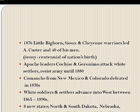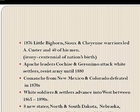Apache leaders Cochise and Geronimo attacked white settlers and resisted army units well into the 1880s before finally surrendering. The Comanche, who had dominated other Indians in New Mexico and Colorado, felt American power in the 1870s. But this resistance only temporarily delayed the advance of white settlers, soldiers, and miners.